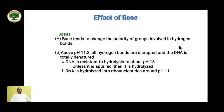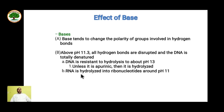Let's see the effect of base on DNA. Base tends to change the polarity of groups involved in hydrogen bonding. Above pH 11.3–11.5, all hydrogen bonds are disrupted and DNA is totally denatured. DNA is resistant to hydrolysis up to about pH 13 unless it is apurinic. RNA is hydrolyzed into ribonucleotides around pH 11.